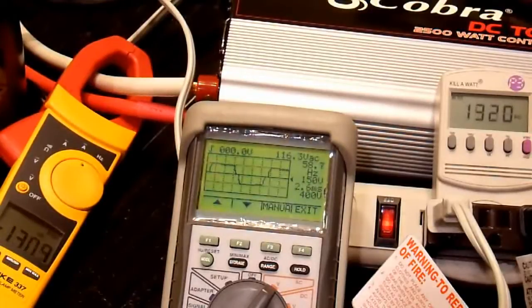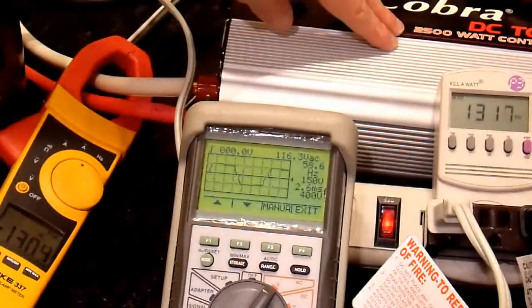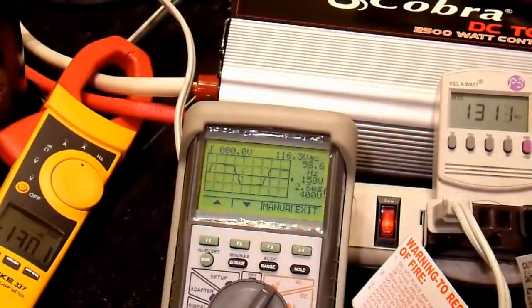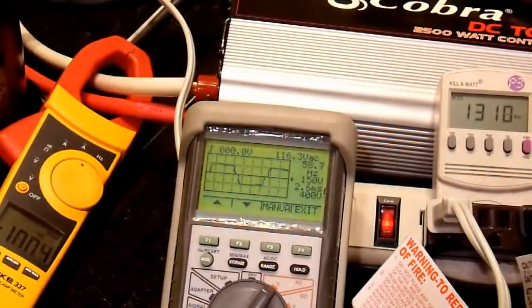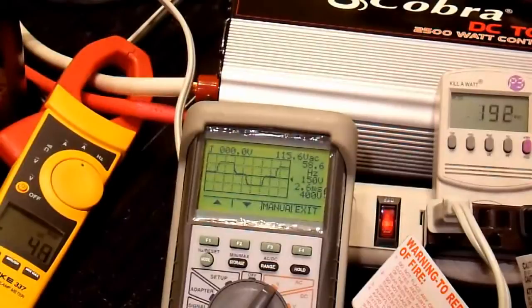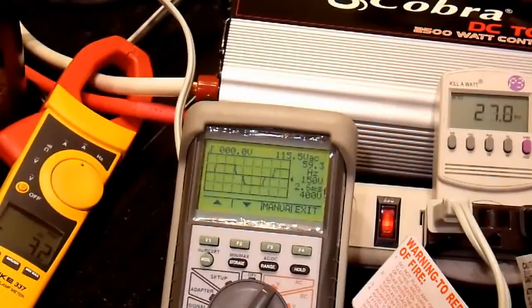So this inverter was not capable of supplying 2500 watts even with this beefed up input power configuration. So I think realistically, you're never going to be able to get 2500 watts out of this. 2000 watts is probably the best you're going to get.